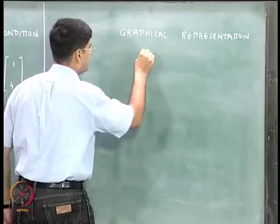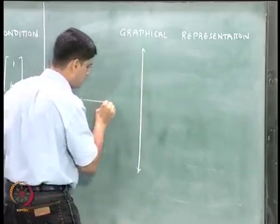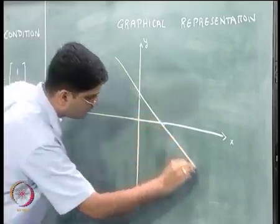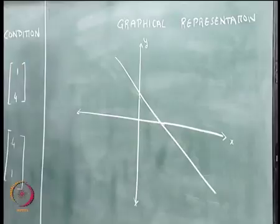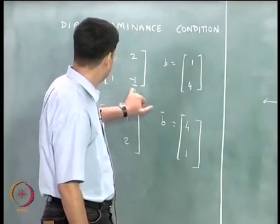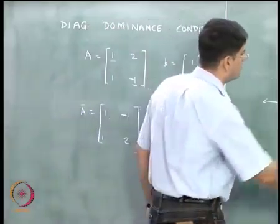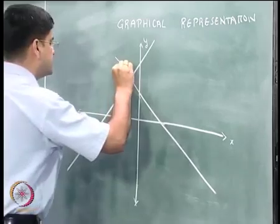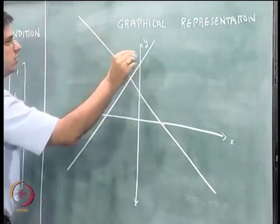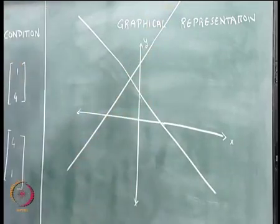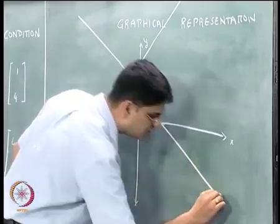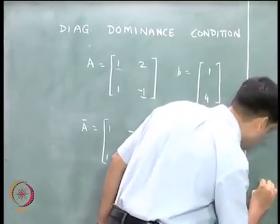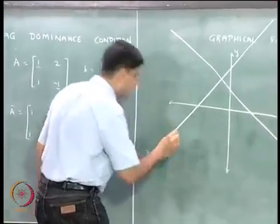We will draw two axes x and y. We plot the line x minus y equal to 4, and we will also plot the equation x plus 2y equal to 1. These two lines represent our system of equations graphically.